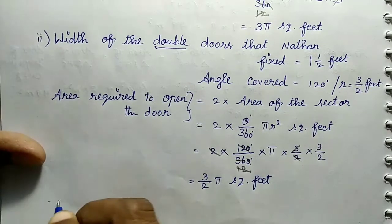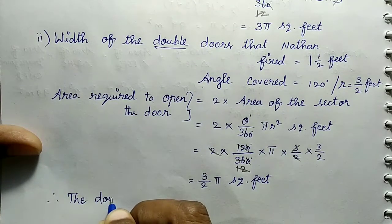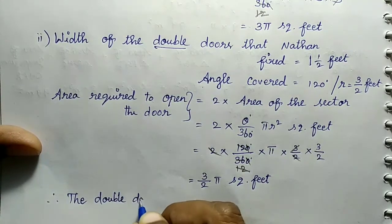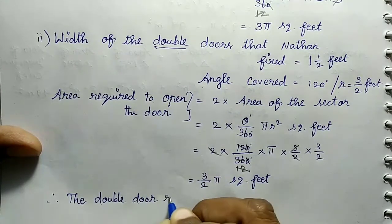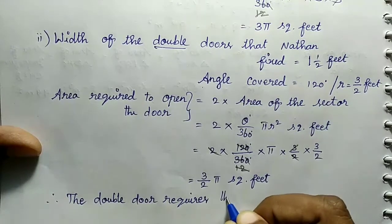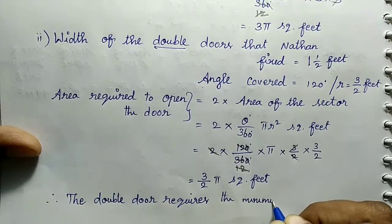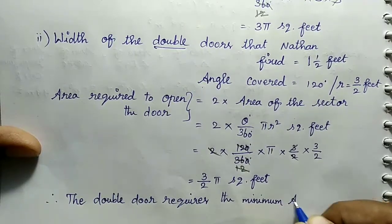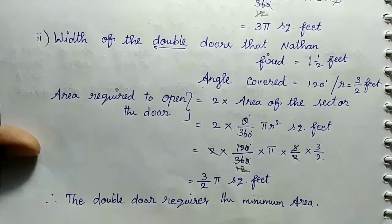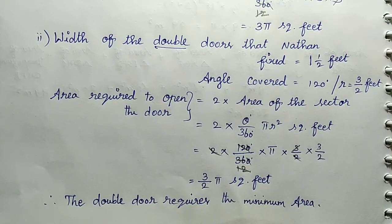Comparing the two: single door area = 3π square feet, double door area = 3π/2 square feet. Since 3π/2 is less than 3π, the double door requires the minimum area. Thank you for watching.